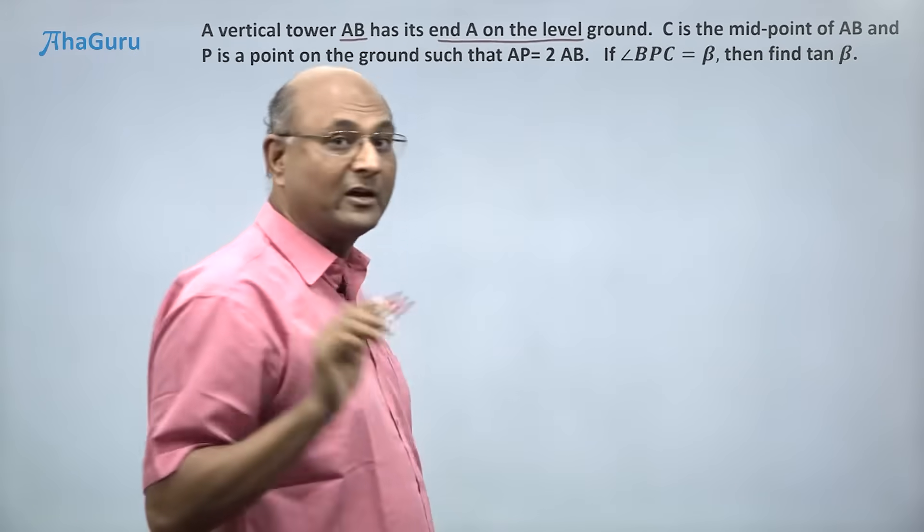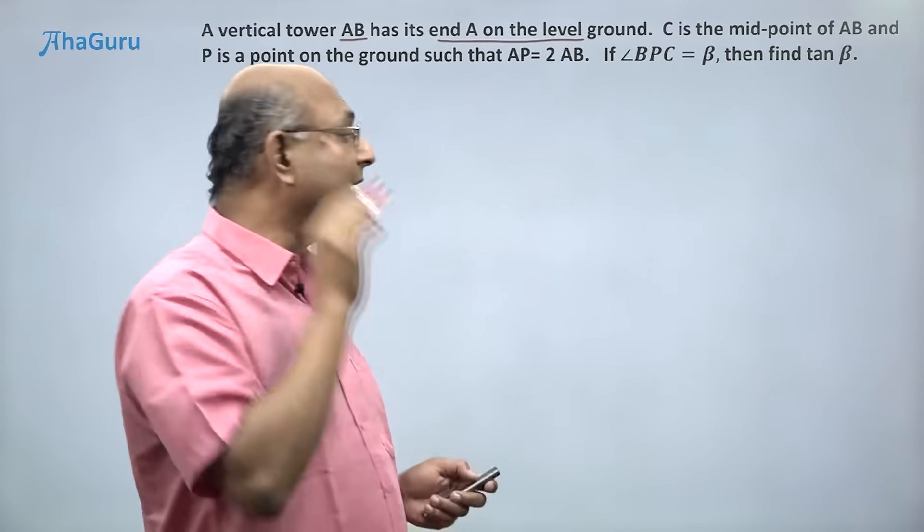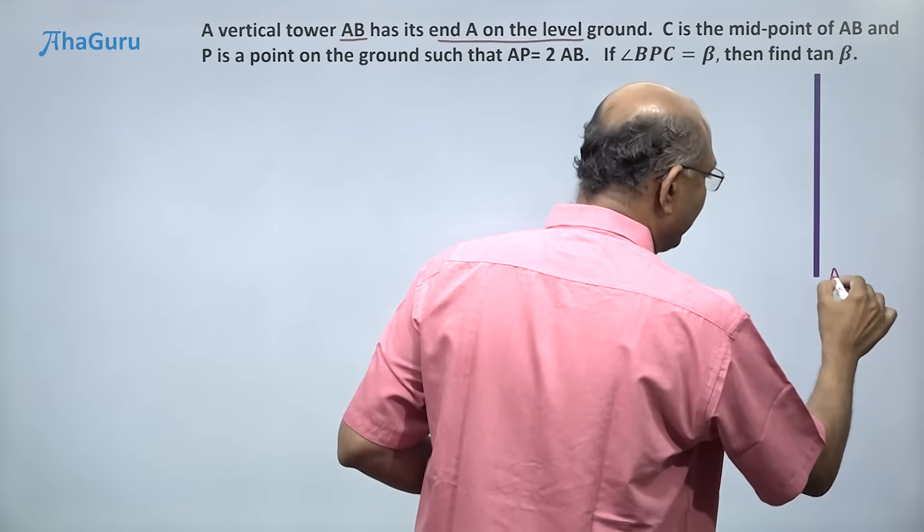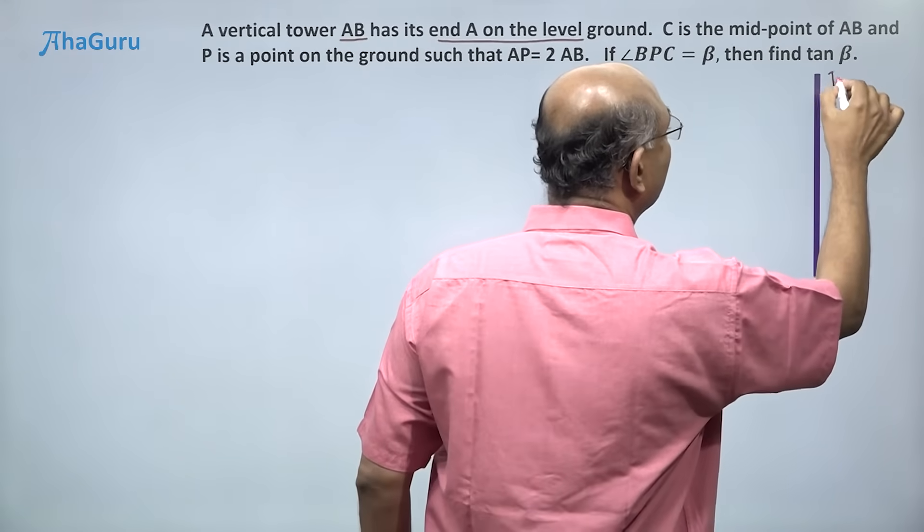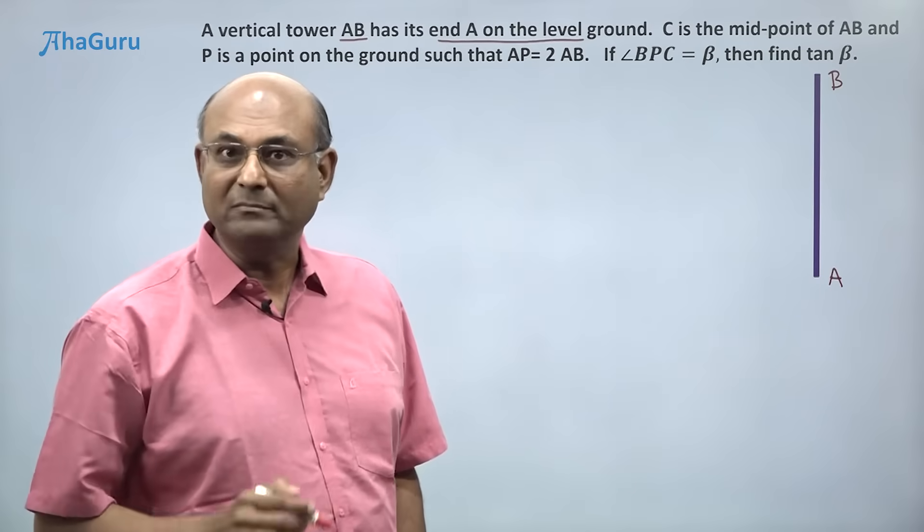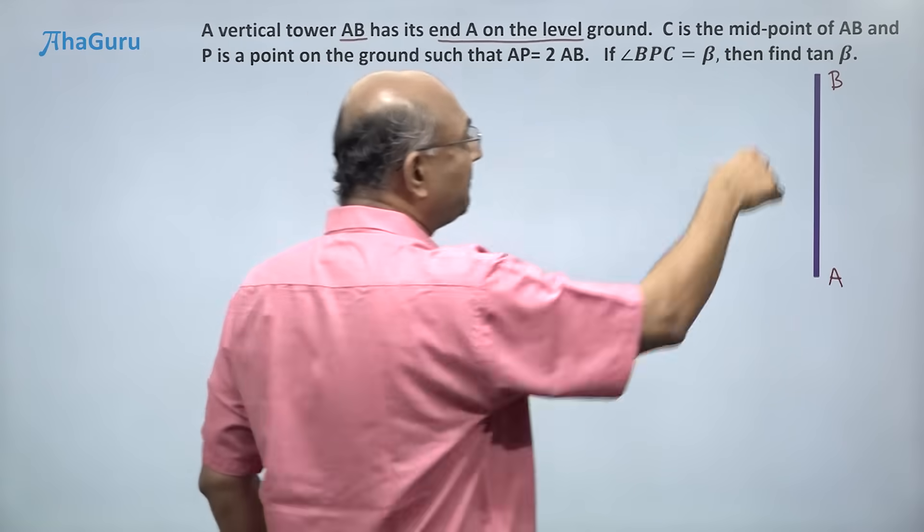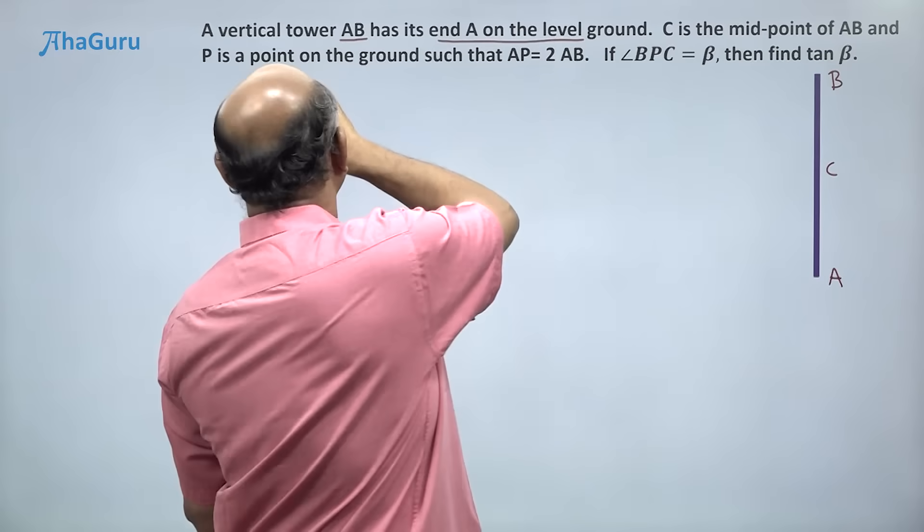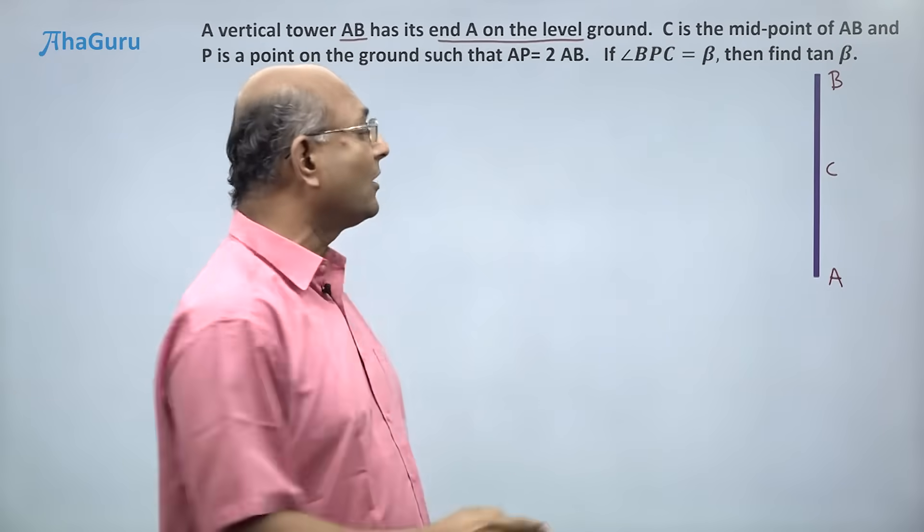So I want a vertical tower. Let me draw this vertical tower - this is A, that is B, because it says that A is on the ground. C is the midpoint of AB, so let me say C is somewhere here. And P is a point on the ground, so we will draw this line, and this point is P.